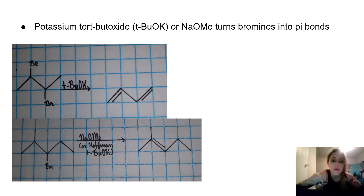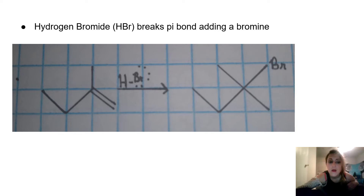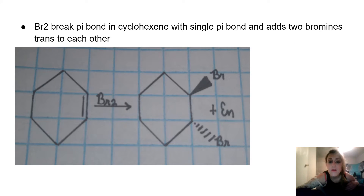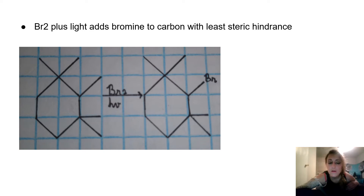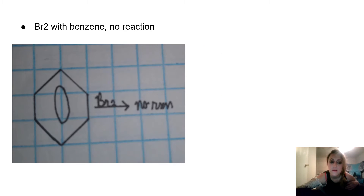Potassium tert-butoxide or sodium methoxide turns bromines into pi bonds. Hydrogen bromide breaks a pi bond and adds a bromine. Br2 breaks the pi bond in cyclohexene with a single pi bond and adds two bromines trans to each other. Br2 plus light adds bromine to the carbon with least steric hindrance. Br2 with benzene has no reaction.